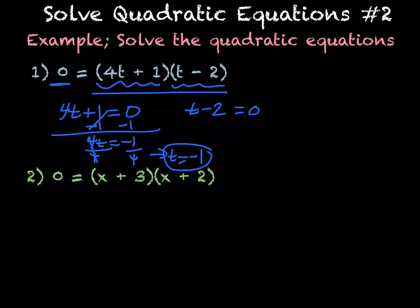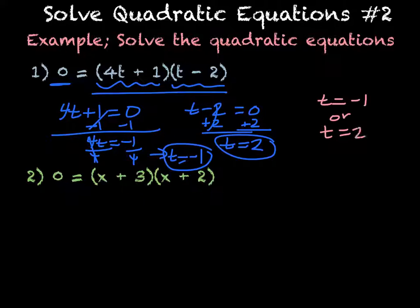And the next one, I have to solve for t on the next problem, add 2 to both sides, leaving me with t = 2. So my final answer is t = -1/4 or t = 2. Those are your two answers.